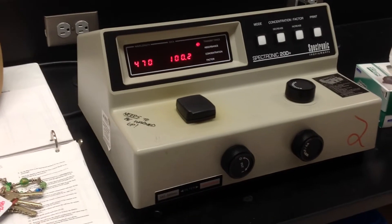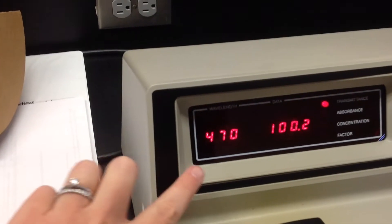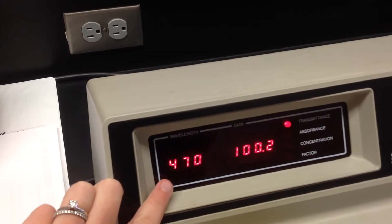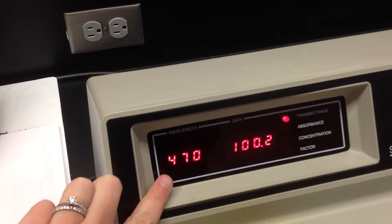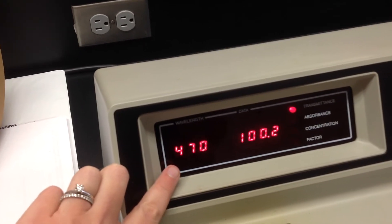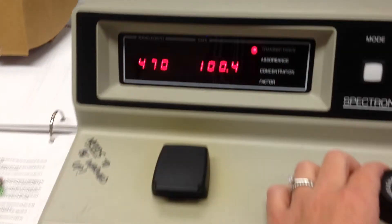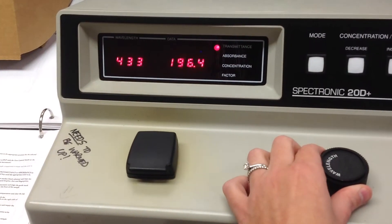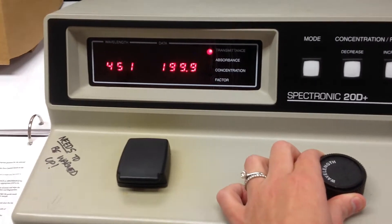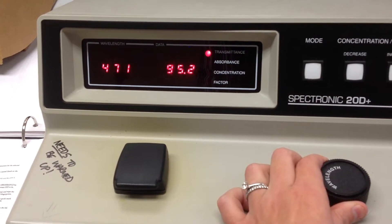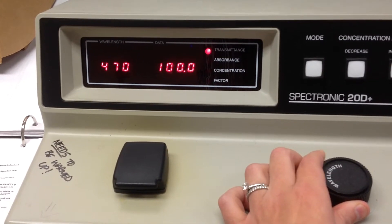So when you walk up to it, what you want to make sure of is that it says wavelength of 470 right here. I will have set it that way before class started, but if somebody bumps into a knob or something, you might see something different. If it doesn't say 470, you're going to use this knob to change it. And you can see as I twist that knob, it changes wavelengths and those numbers jump around wildly. And that's okay. So you want to make sure that it says 470, exactly.